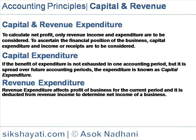Additions or Improvement of Asset: An additional item of plant or machinery bought to improve the capacity, efficiency, lifespan, or economy of operation. For example, more spindles added in a ring frame in a spinning mill. The cost of such spindles added is a capital expenditure.